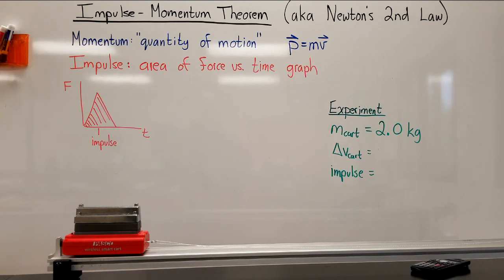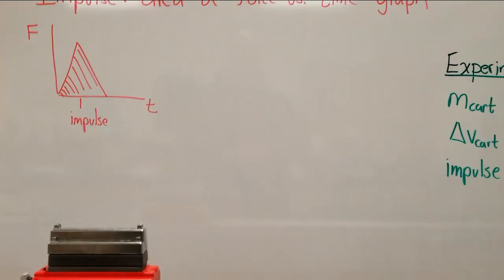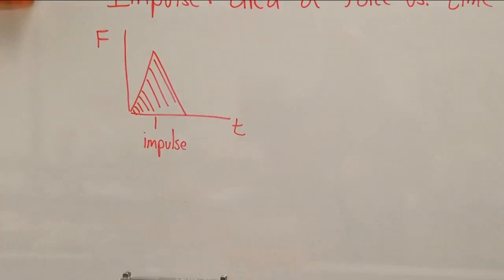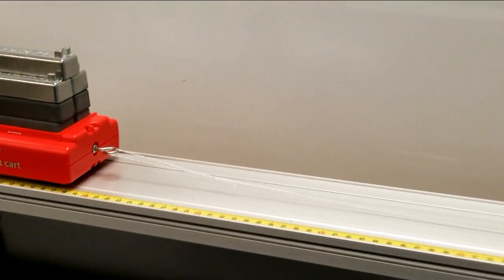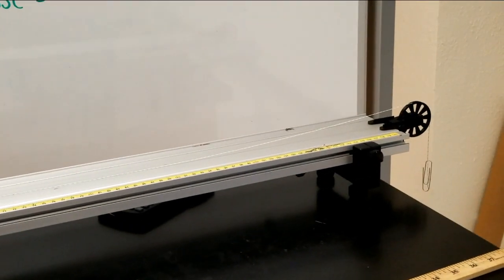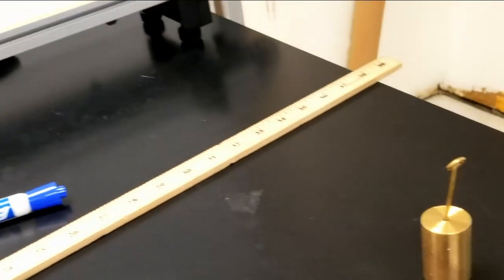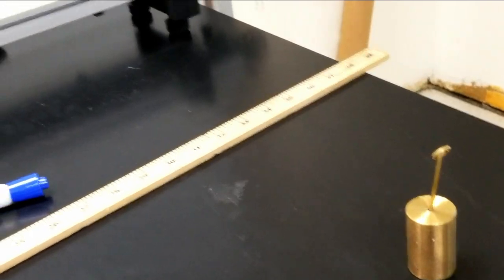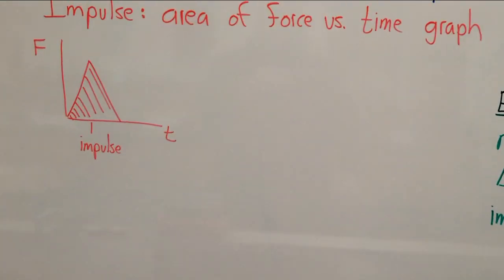The second new term is the term impulse. Impulse is the area of a force versus time graph, kind of like you see over here on the left. What we're going to do to investigate this is use a force sensor on one of our smart carts, and we're going to pull it with a mass attached to a string.